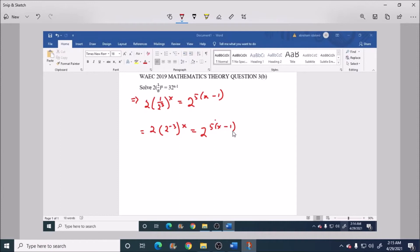So let's continue. This is the same thing as saying 2 raised to power 1 times 2 minus 3x is equal to 2 to the 5x minus 5.